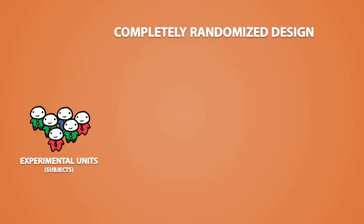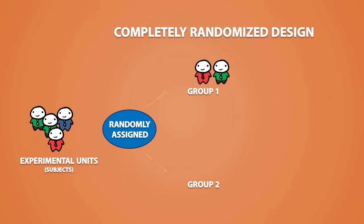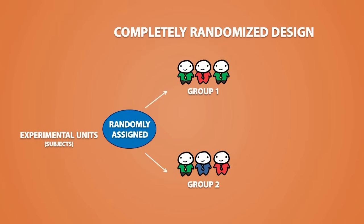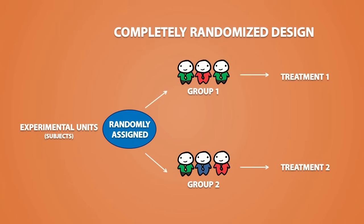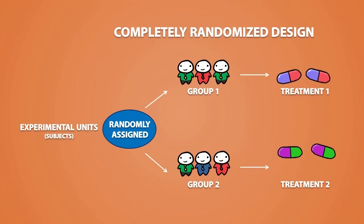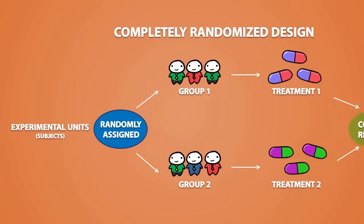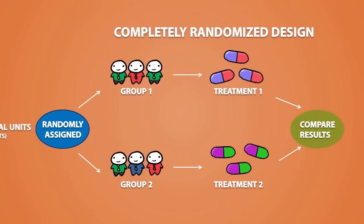In a completely randomized design, each experimental unit is randomly assigned to a random group to receive a different treatment. Each unit in the same group will receive the same treatment, and at the end of the experiment, you will compare the results from each treatment.